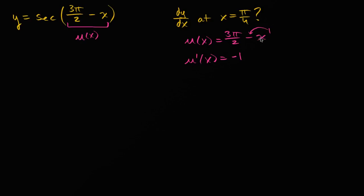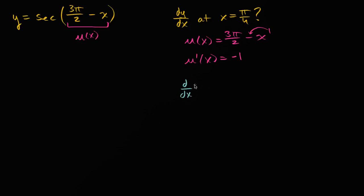It's one times negative one times x to the zero power, which is just one. So we view this as the derivative of secant with respect to u of x, times the derivative of u with respect to x. In other videos we prove that the derivative of secant of x is equal to sine of x over cosine squared of x. Secant is just one over cosine of x, so it comes straight out of the chain rule.